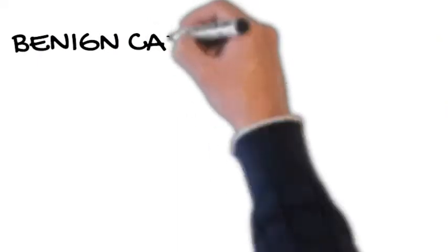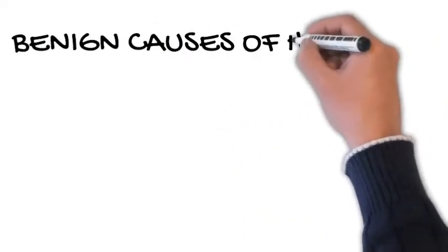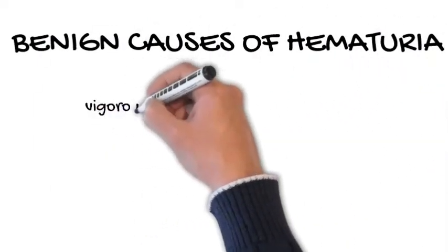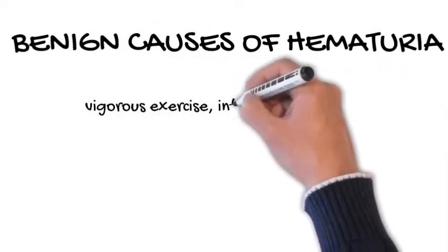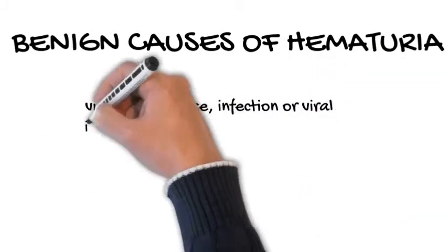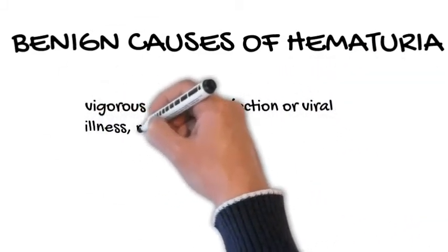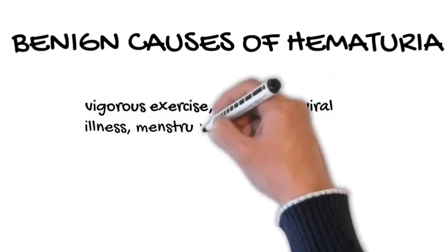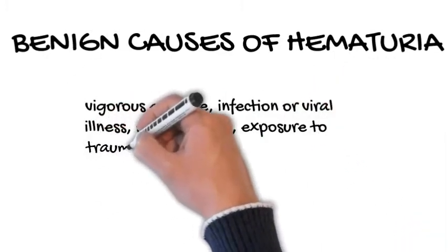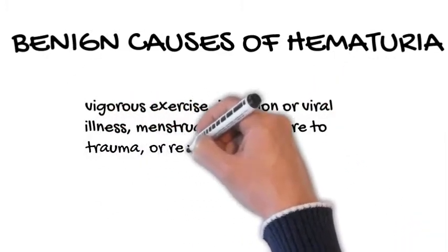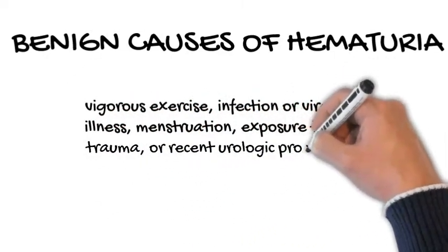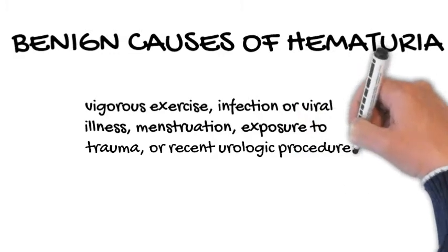Benign causes of hematuria: Many causes of microscopic hematuria do not require a full diagnostic workup, including vigorous exercise, infection or viral illness, menstruation, exposure to trauma, or recent urologic procedures.